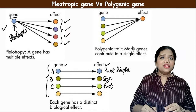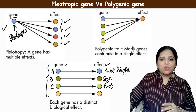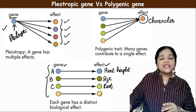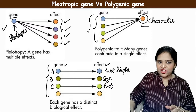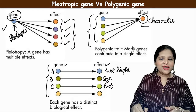What is a polygenic gene? This is completely different. If one character in an organism is controlled by different genes, this is called a polygenic gene. So here, one character is controlled by different genes. Whereas in a pleiotropic gene, one gene controls different characters. These are the differences between polygenic gene and pleiotropic gene.